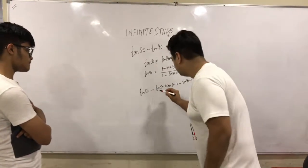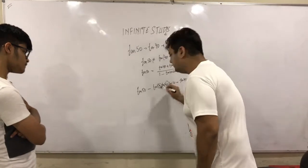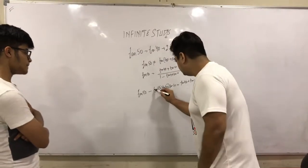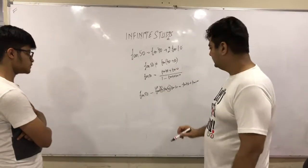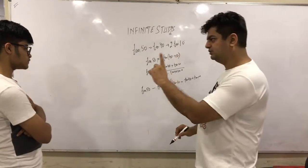Very interestingly, if you try to remember, these both are complementary angles. If you replace tan 50 by cot 40, and tan 40 into cot 40 happens to be 1.